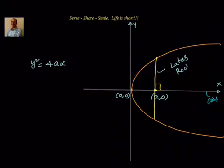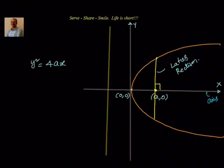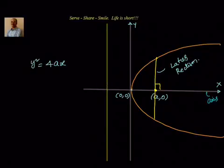Now, how to find out the length of the latus rectum? If (0, 0) is the vertex, we know that the directrix will be at point (−a, 0). The directrix is parallel to the y-axis because it is perpendicular to the axis of parabola. So, one point on the directrix is (−a, 0).